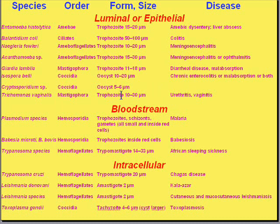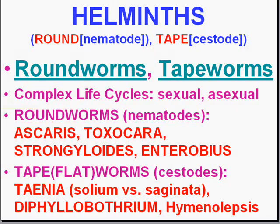We're done with our last busy slide and going to show some nice pictures now. The metazoans can be divided into two groups. If you equate metazoans with helminths, think of the roundworms — which are physically round — and the tapeworms, which are physically rather flat and segmented. Also remember that in phylogeny, there's a third class of worms called annelids, which are the earthworms we see in our gardens, but none of the annelids are known to infect humans.